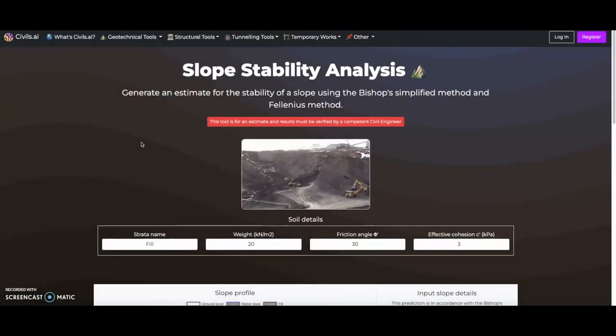Now let's look at how to use Civils.ai to calculate slope stability. In the first section we input our soil properties. We assume homogenous soil throughout the entire slope and that long-term drained properties govern the analysis.